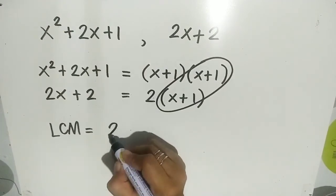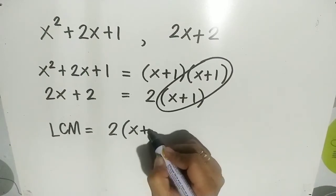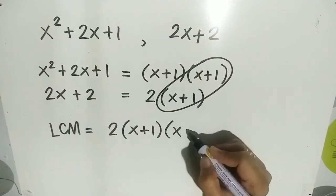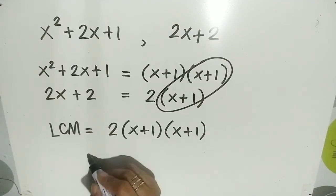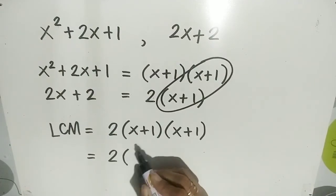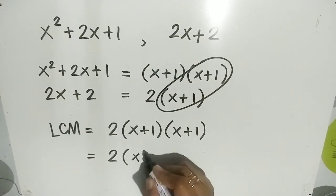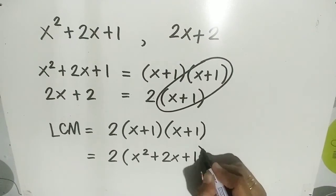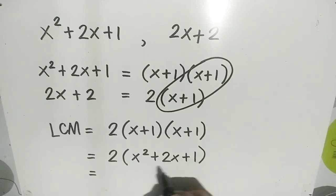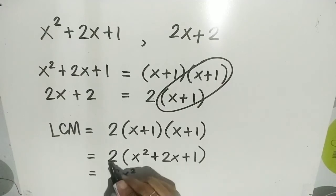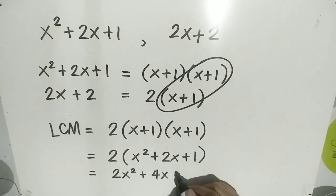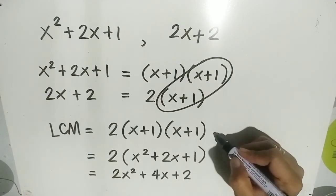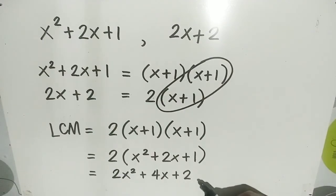For the LCM, we have numerical coefficient 2, common factor x plus 1, and non-common factor x plus 1. So the LCM in factored form is 2 times (x plus 1) times (x plus 1), or 2(x plus 1) squared. In expanded form, we distribute 2 to each term of x squared plus 2x plus 1: 2 times x squared is 2x squared, 2 times 2x is 4x, and 2 times 1 is 2. So the LCM in expanded form is 2x squared plus 4x plus 2.